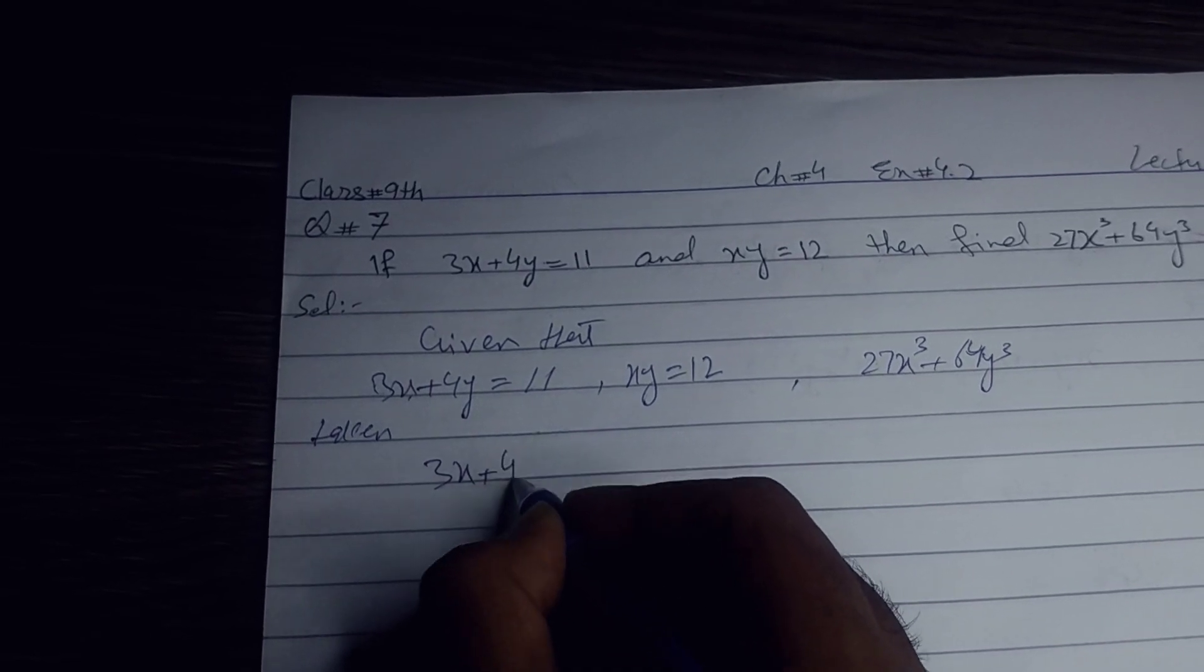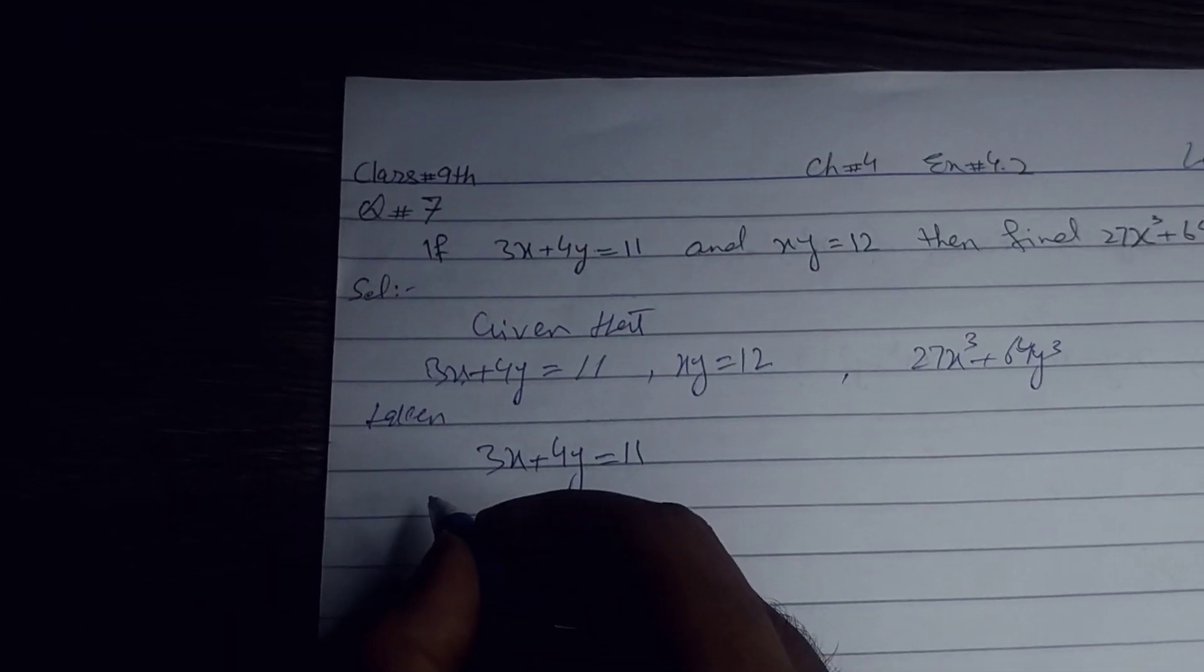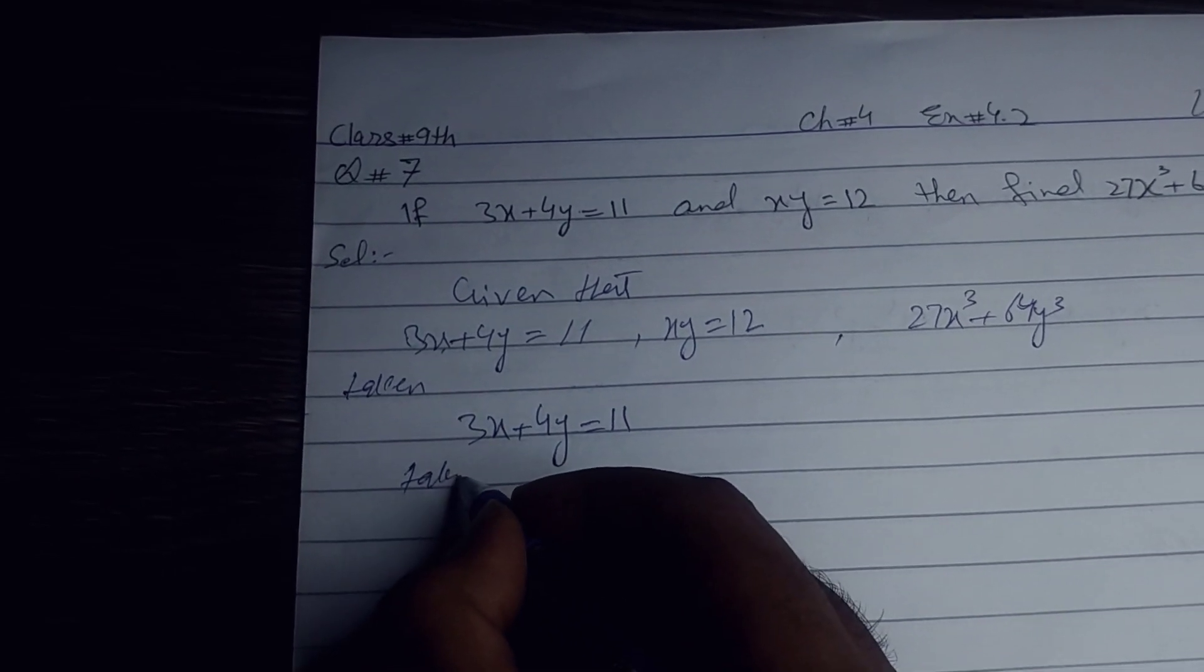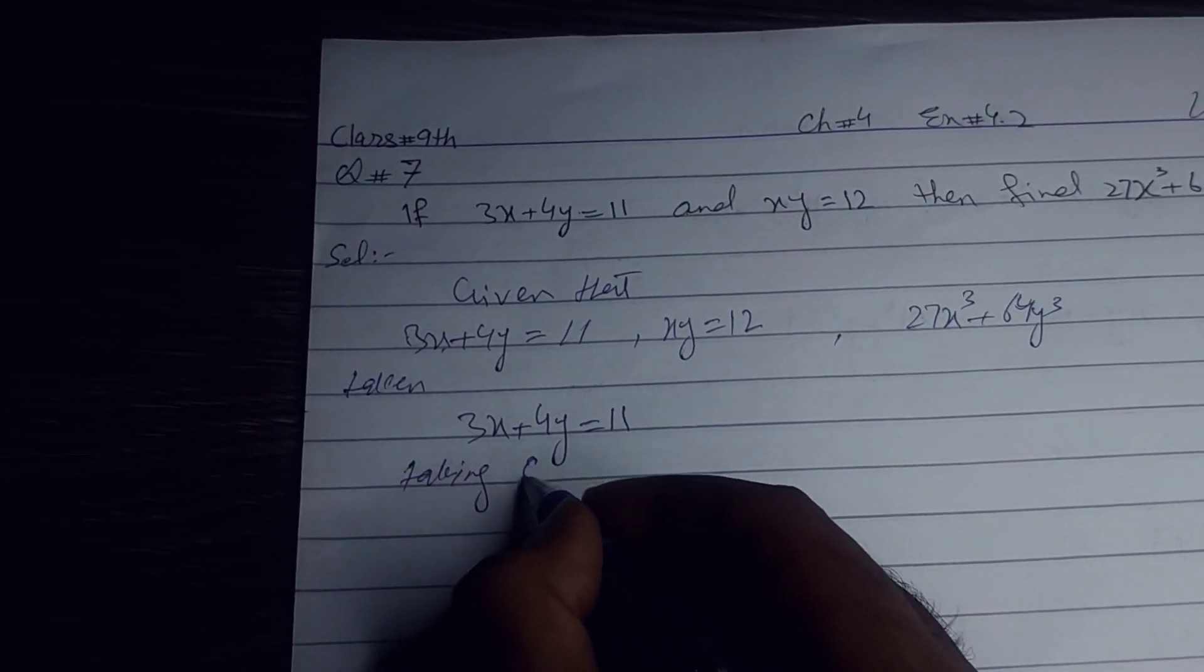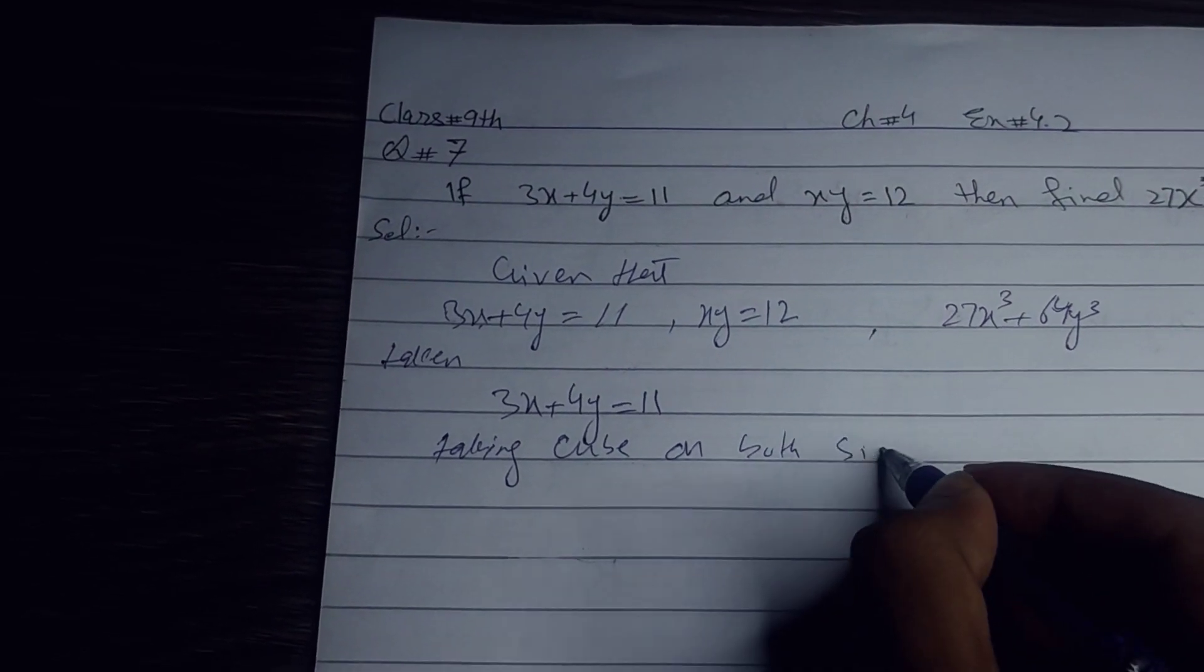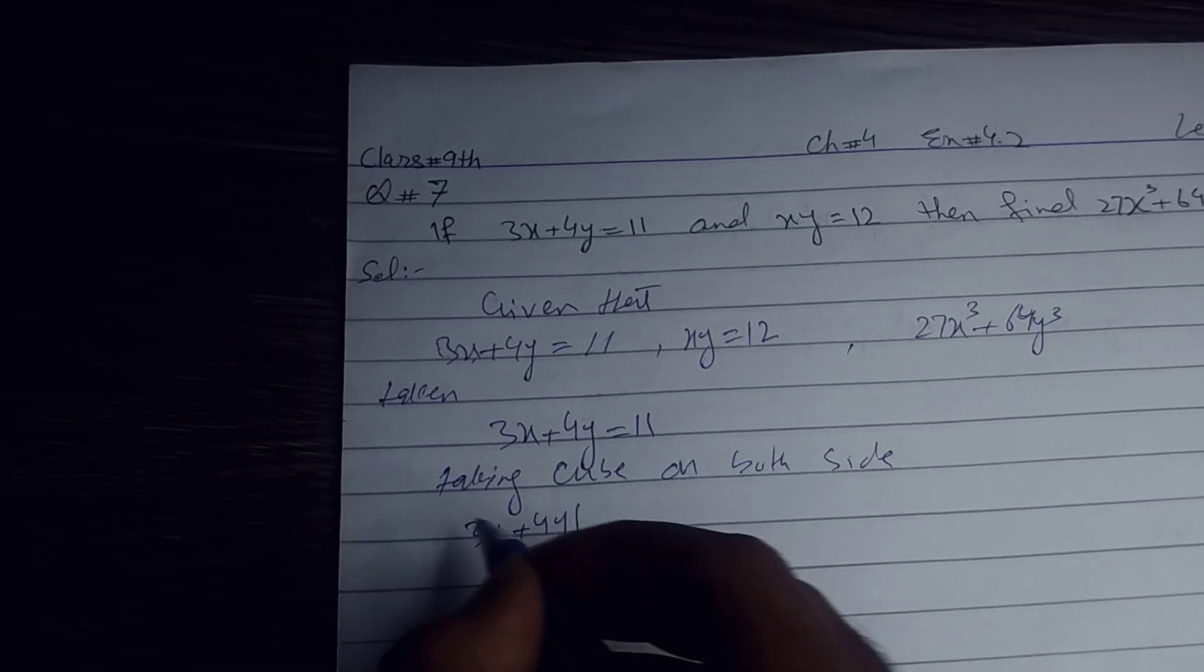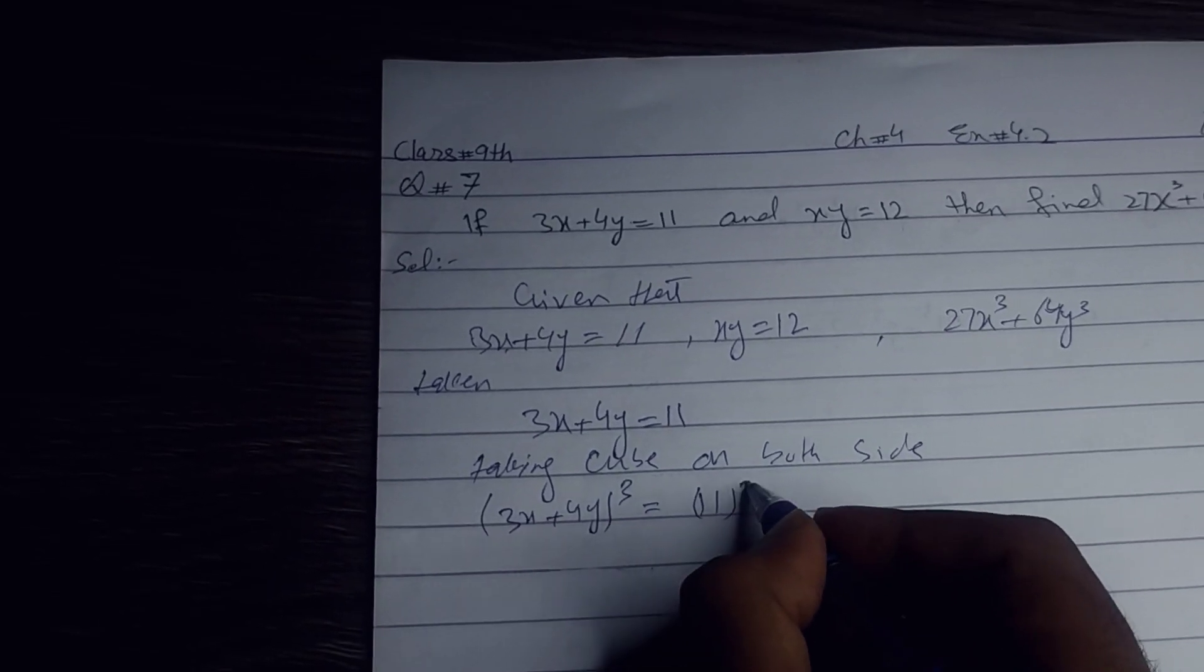Taking 3x plus 4y equals 11, and taking cube on both sides, we get (3x plus 4y)³ equals 11³.